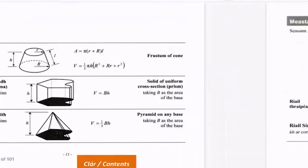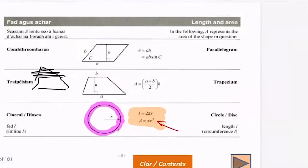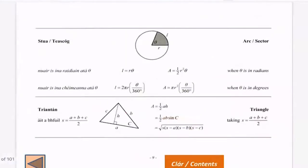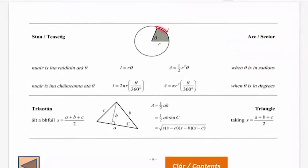So if we go back to the area and volume section of the log tables, which is here, and you go onto the next page, you'll see there's a whole section on arcs and sectors. And there's two formulas, l, which is the length of a sector. Or there's a for the area of a sector. So we're being asked for the length.